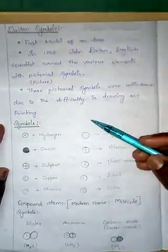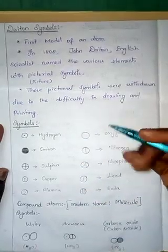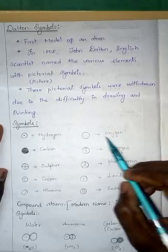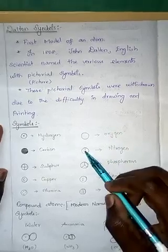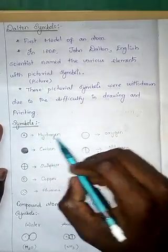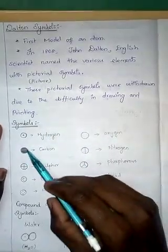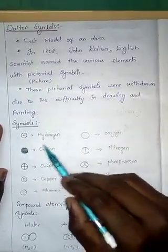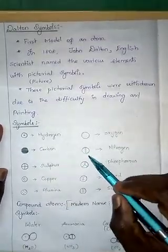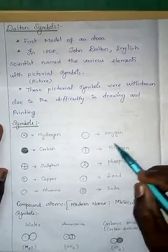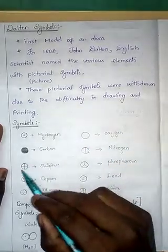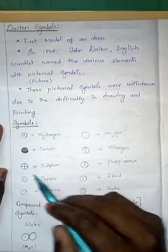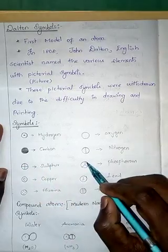Let us look at the symbols Dalton gave us. A plain circle indicates oxygen. A circle with a dot is hydrogen. A shaded circle is carbon. A circle with a vertical line is also used for hydrogen. A circle with a plus sign inside represents sulfur.